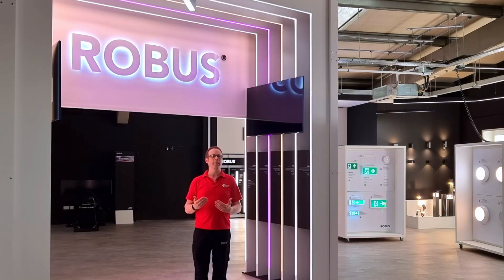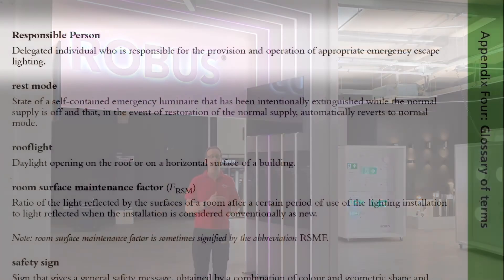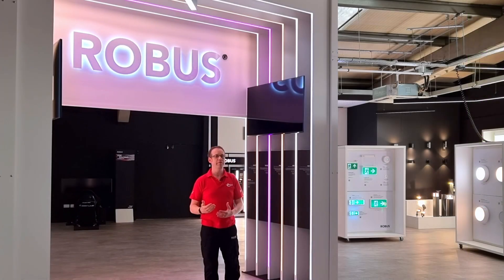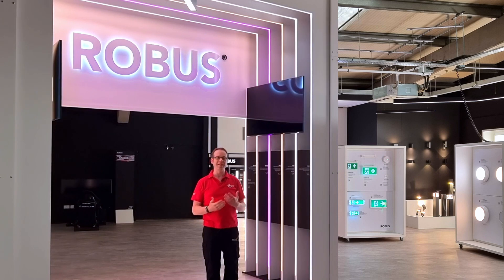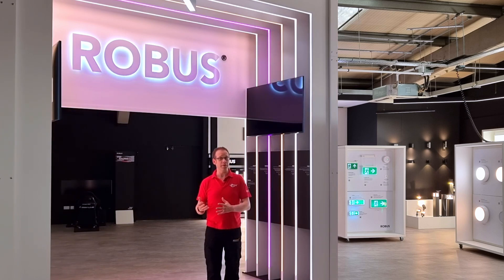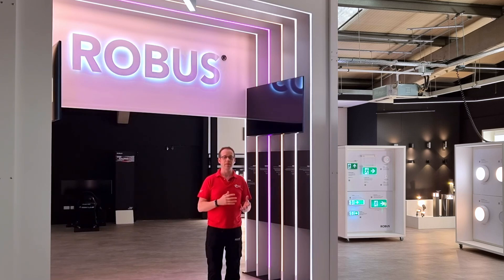But is someone working in a building and acting as a responsible person going to have the necessary skills to be, as the SLL Handbook says, responsible for the provision and operation of appropriate emergency escape lighting? Well, maybe — maybe not. But the role of responsible person isn't about doing all the work yourself. It is possible to delegate work to others with skills that you don't have. Being responsible sometimes means knowing what you don't know and making sure you bring in someone who can fill that skill or knowledge gap.